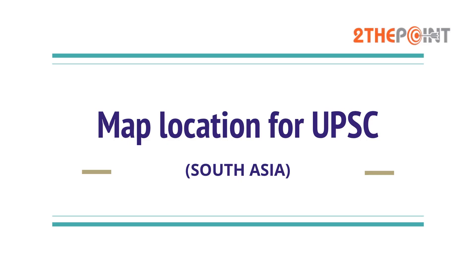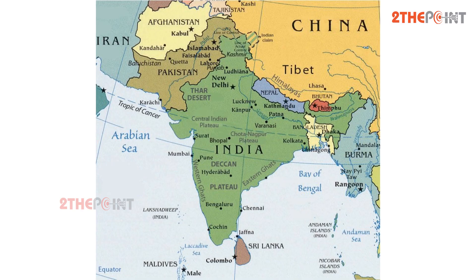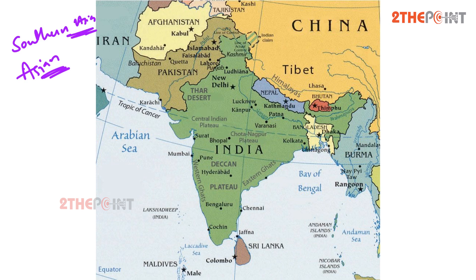Welcome to the session. Today let's discuss the physical features of South Asia. South Asia, also called southern Asia, is a southern region of the Asian continent. It comprises some Himalayan countries and also other countries that adjoin to the west and east of this region. Topographically, it is dominated by the Indian plate, which rises above sea level as the northern parts of India, south of the Himalayas and the Hindu Kush.